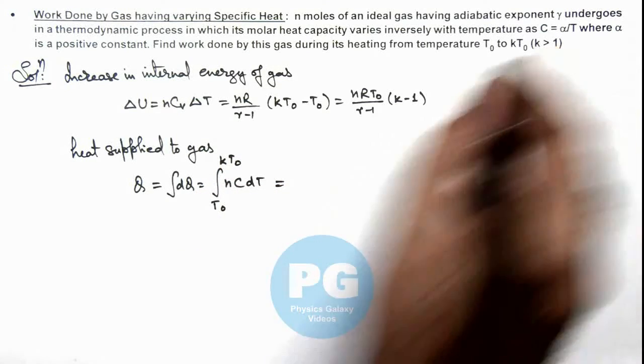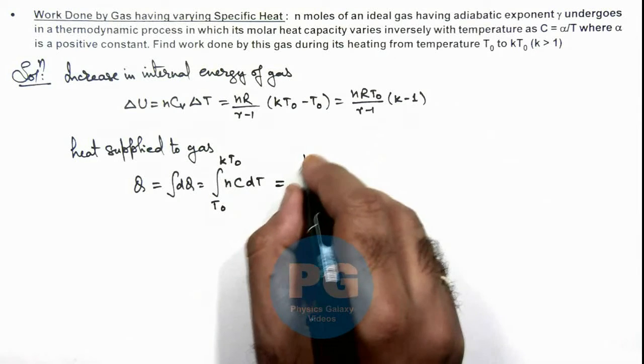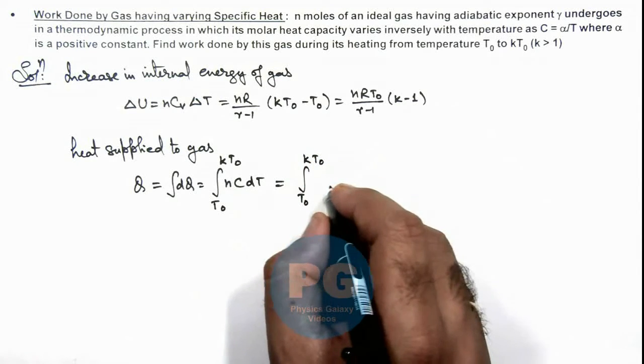If we substitute the value of c from here, this integration from T₀ to kT₀, this will be n(α/T)dT.